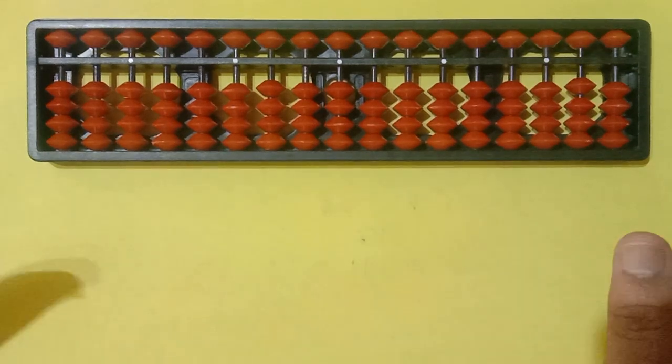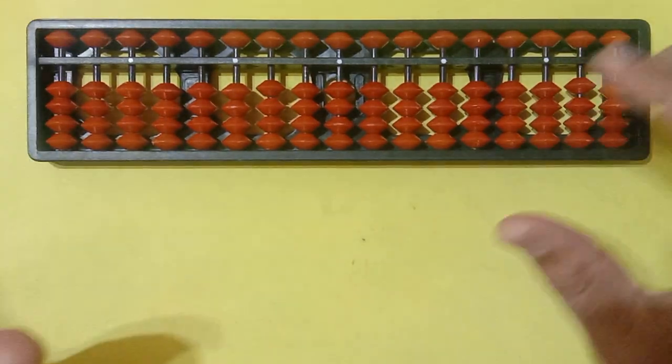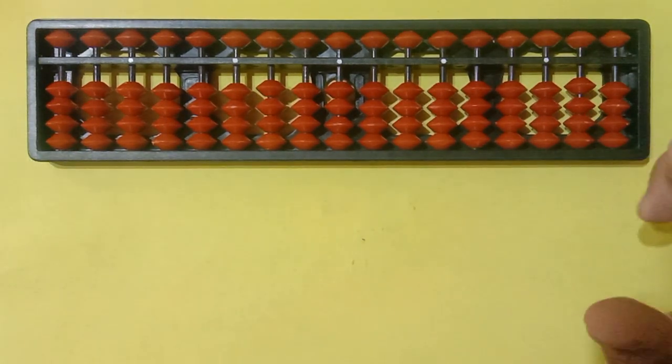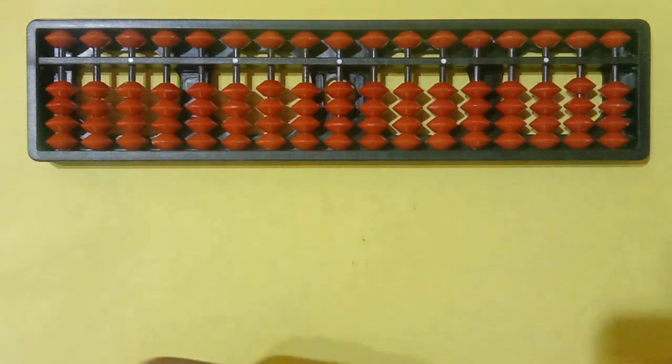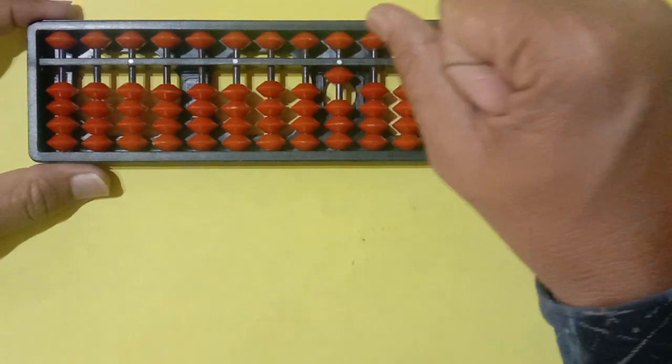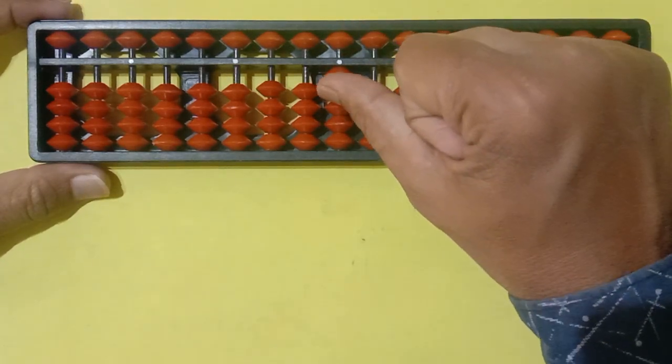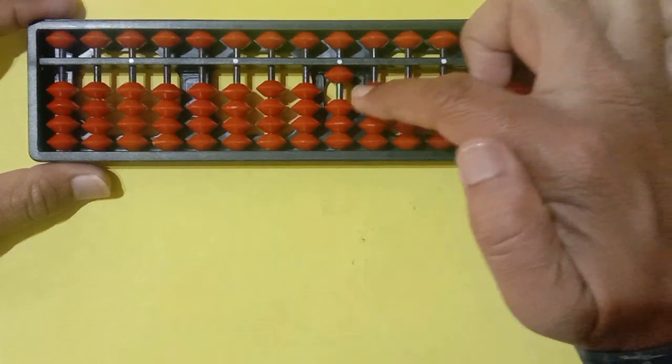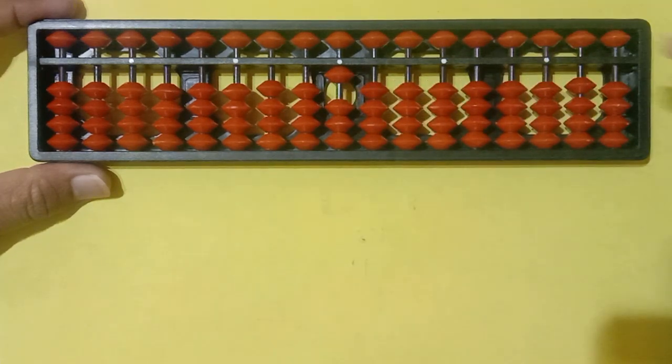Now let us see how to write the numbers between one to nine. You know the one to nine, then only you can write, you can form the numbers. See here. If you do this one, this is the one. You can see, this gives the value one.